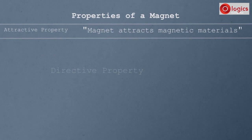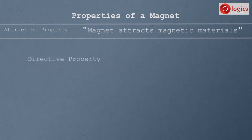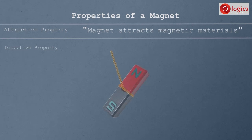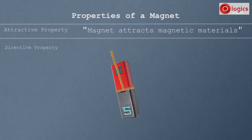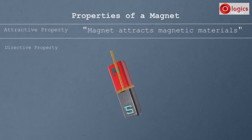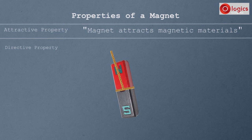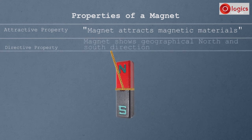Directive property: a magnet has another important property — showing geographical directions. When a magnet is suspended freely, it always points in the north and south geographical directions. Therefore, magnets are used to find geographical directions.